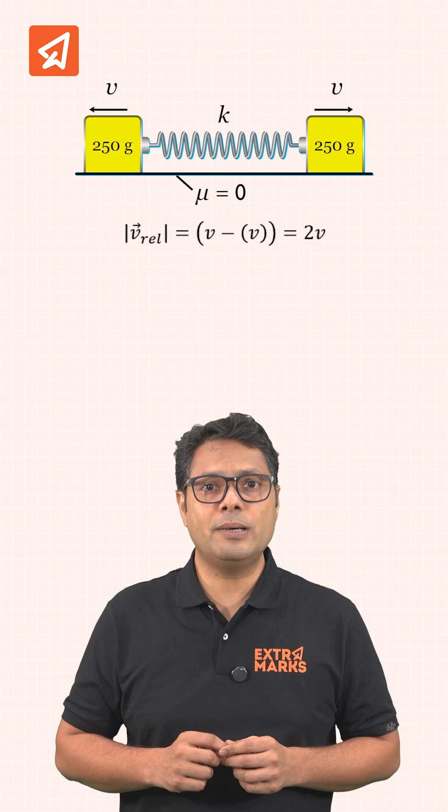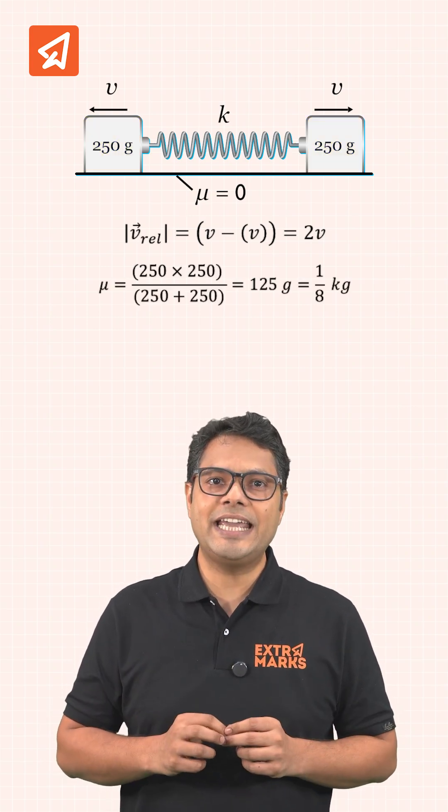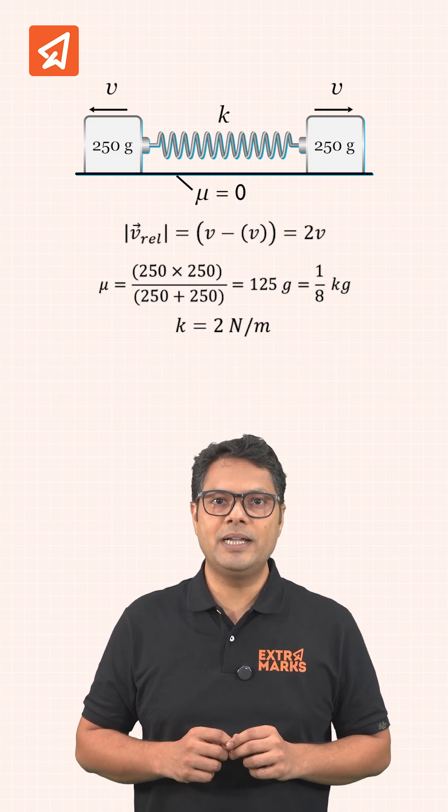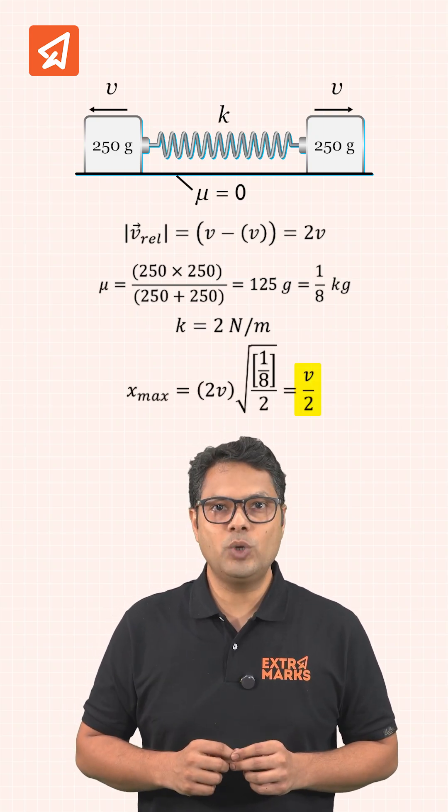Since the masses of both the blocks are 250 grams, the reduced mass in kg becomes 1 by 8 kg. The value of spring constant is 2N per meter. After using the trick, we get the answer as v by 2.